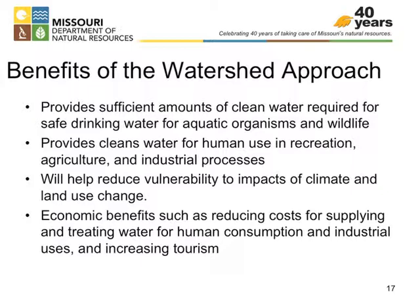There's many benefits to taking an approach to water quality in this way. We can provide sufficient amounts of clean water required for safe drinking and for aquatic organisms and wildlife. Provide clean water for human use in recreation, agriculture, and industrial processes. It will help reduce vulnerability to the impacts of climate and land use changes. Create economic benefits, such as reducing costs for supplying and treating water for human consumption and industrial uses, and also increase tourism. We talked last month about the paddling on the Missouri River. It's a direct benefit of this type of approach.